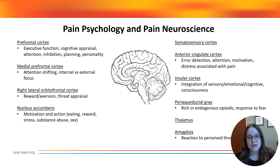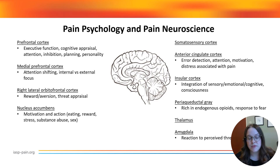And lastly, the amygdala, which is associated with response to perceived threat. The amygdala plays a key role in emotional and affective responses and learning, such as fear and anxiety. Activity in the amygdala is associated with pain-related emotional responses, and hyperactivity is associated with inhibition in the medial prefrontal cortex and cognitive function.